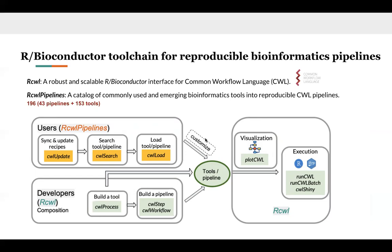We suggest users start with RCWLpipelines, where they can search for a specific tool or pipeline in our catalog using RCWLsearch. We can use multiple keywords for searching, and when you have your tools, you can load them directly into the R environment. One can also develop their own set of tools and pipelines and contribute to RCWLpipelines to share with the broader community. The whole data analysis task, including the pre-processing steps and the modeling step, can be submitted as a CWL task through R using execution functions such as RunCWL and RunCWLBatch, to submit them in parallel on HPC or using our Shiny application.